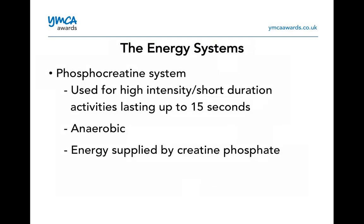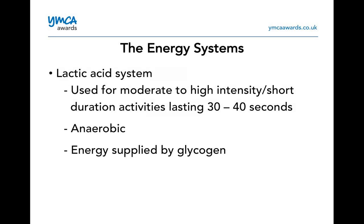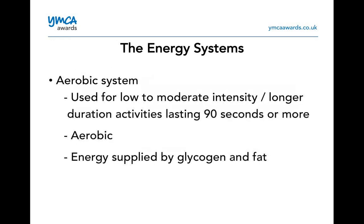The three energy systems: the phosphocreatine system is used for high-intensity, short-duration activities lasting up to 15 seconds — anaerobic, with energy supplied by creatine phosphate, used for a 15-metre sprint or 100-metre sprint. The lactic acid system is for moderate to high intensity, short-duration activities lasting 30 to 40 seconds — still anaerobic, energy supplied by glycogen. The aerobic system is for low to moderate intensity lasting longer than 90 seconds — aerobic, using glycogen and fats for energy.